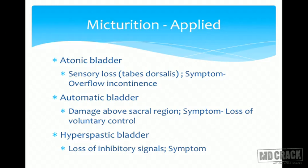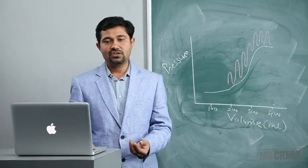Another applied condition is the hyperplastic bladder. Higher centers provide both facilitatory and inhibitory signals. If inhibitory signals are lost, facilitatory signals become dominant and continuously facilitate the micturition reflex, keeping the bladder in a sustained state of contraction. The bladder capacity decreases, and small amounts of urine are continuously emptied. This is called the hyperplastic bladder, resulting from loss of inhibitory signals from higher centers.